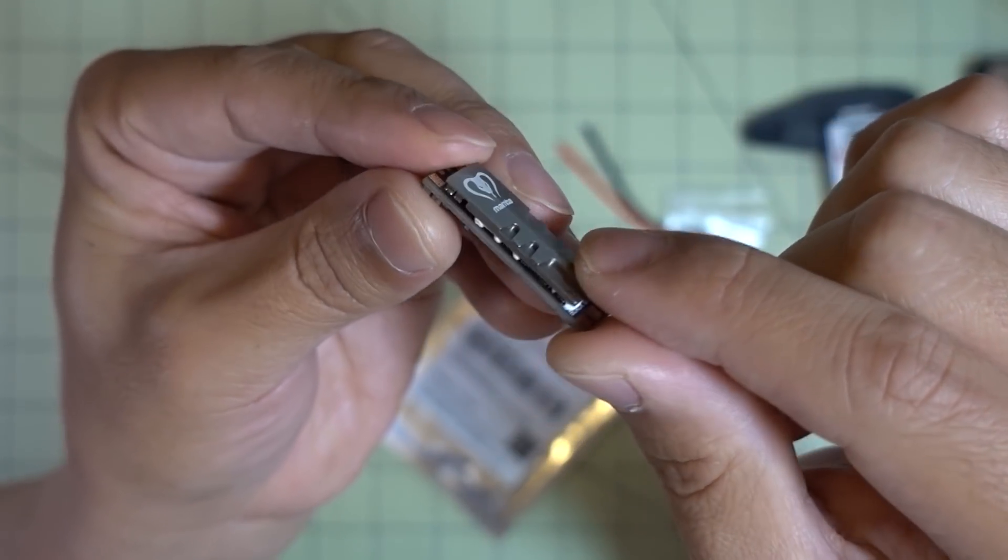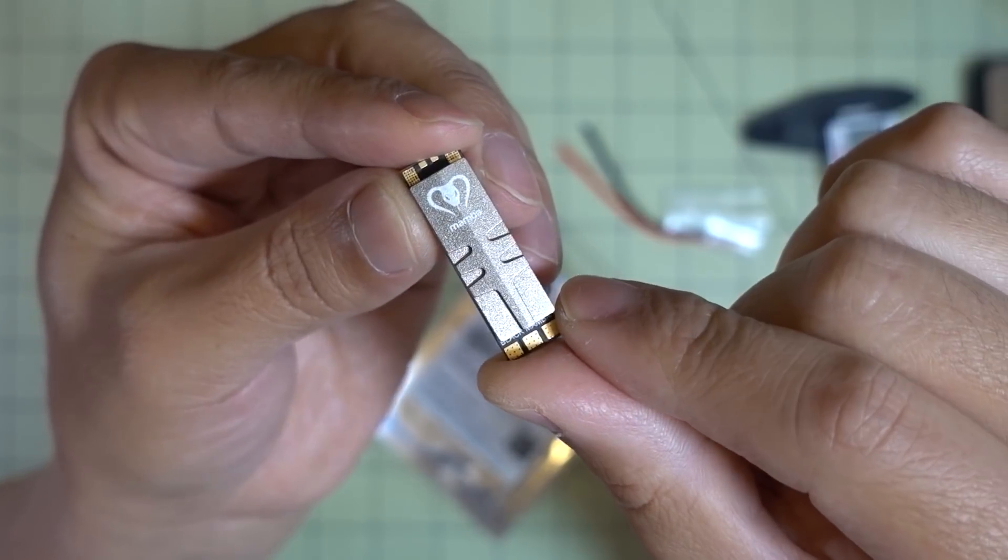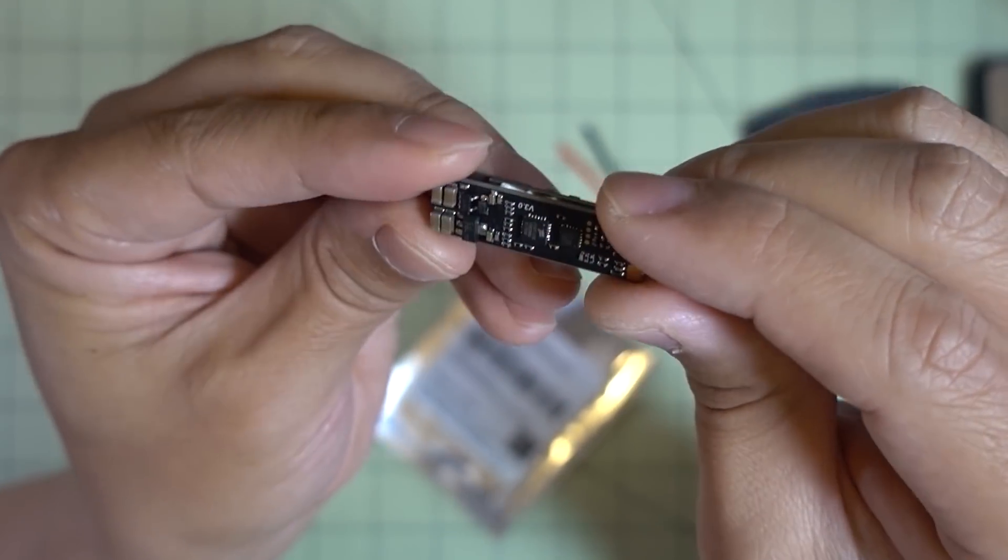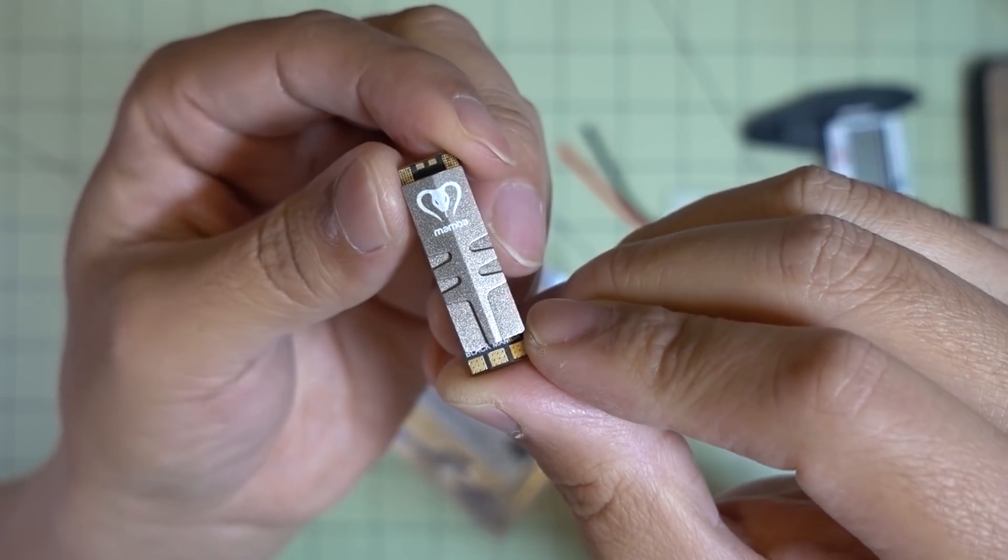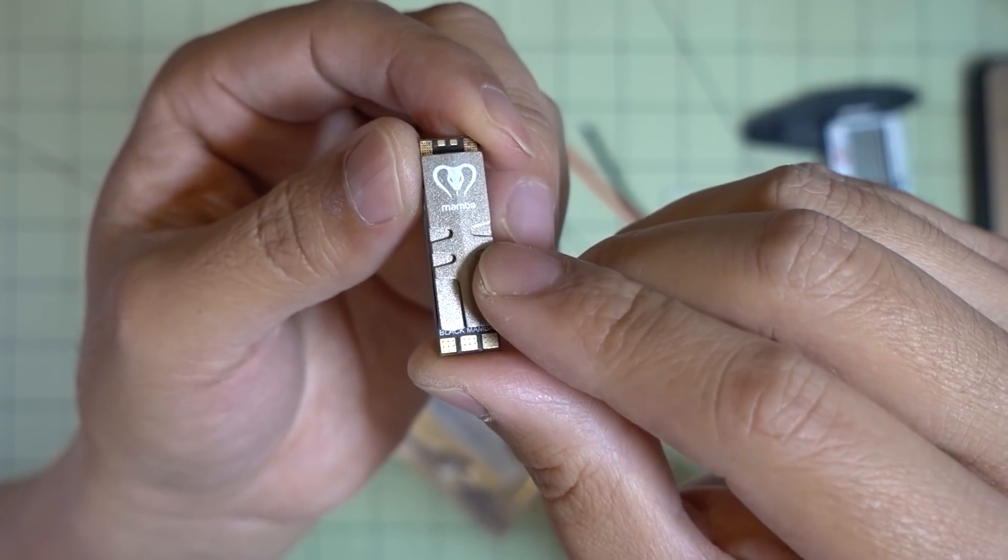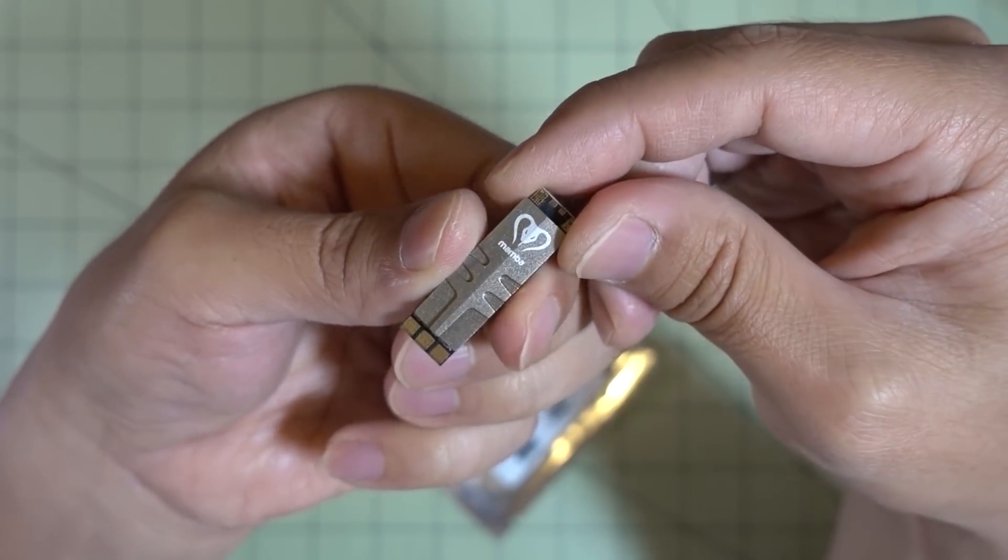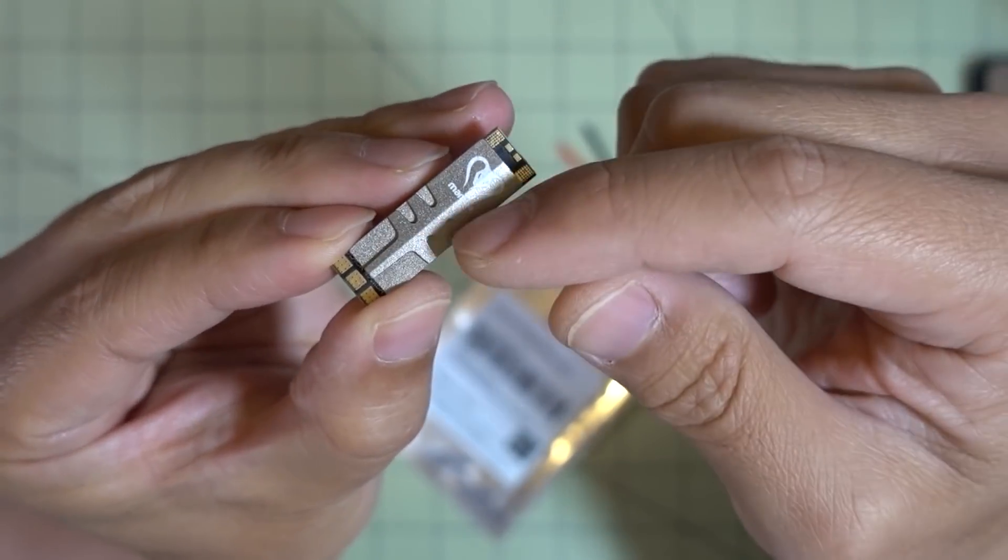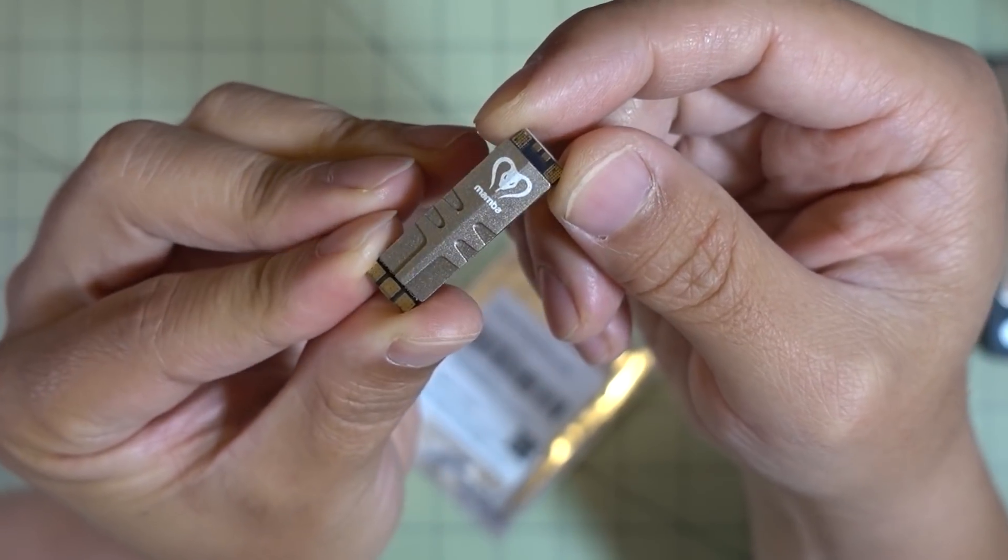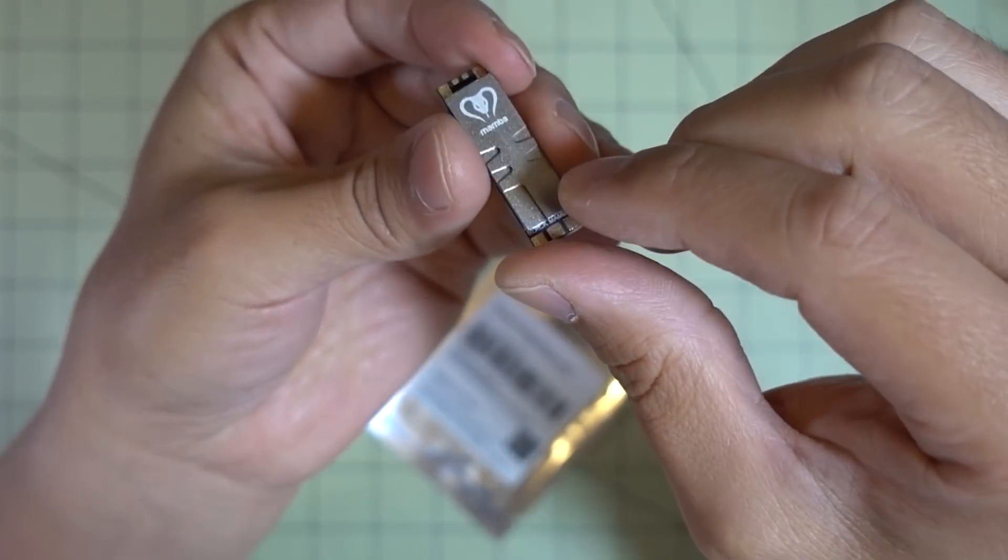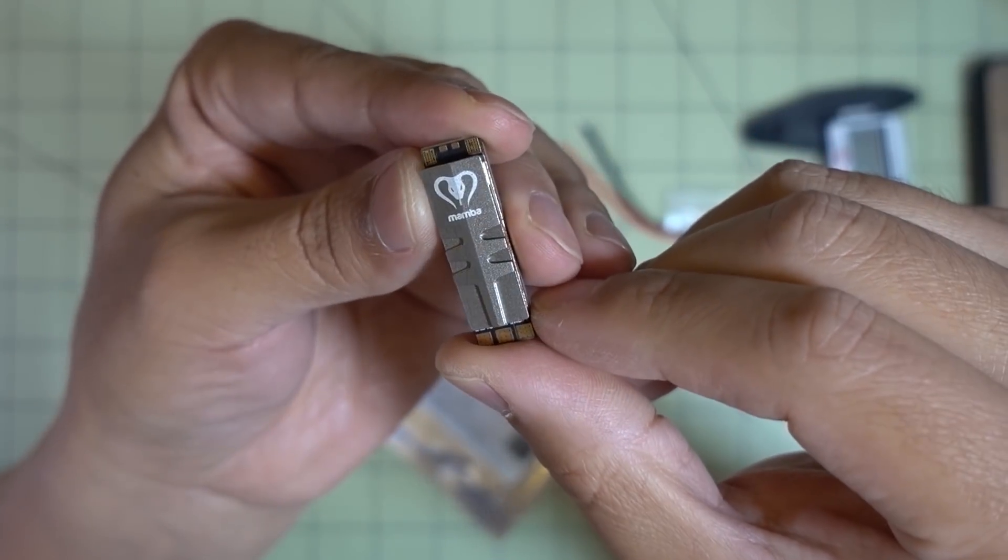If you have some builds for skinny arms and want to put the ESCs on the arms, this is I think the only one, or one of the very few ones that are skinny like this. Most of the other ESCs that are in the 40 amp range are going to be quite a bit wider, at least 15 to 20 millimeters in width. So it doesn't give you a lot of options for using ESCs on the arms for those skinny arm frames.